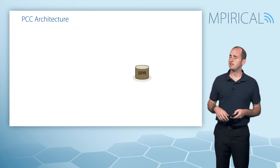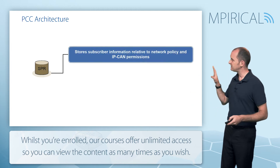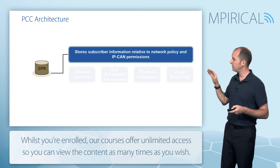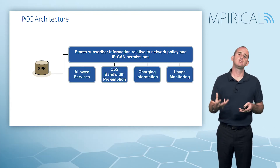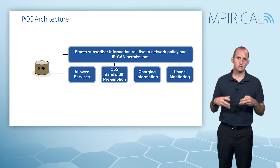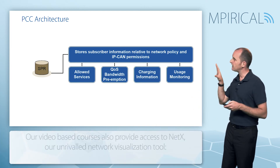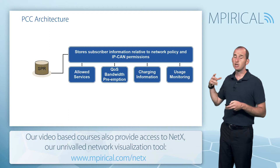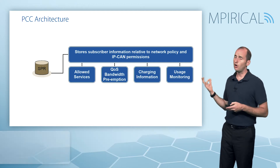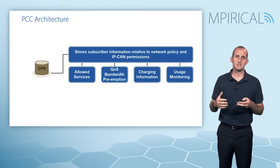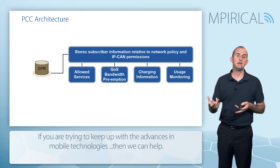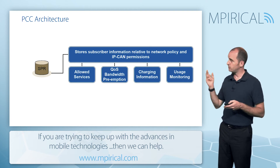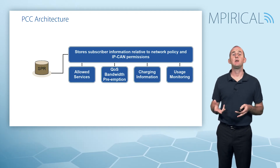Next we have the subscription profile repository, which is essentially a central repository of subscriber information. That information could be quite varied but is related to the kind of services the subscriber would be allowed to establish — things like allowed services, QoS profiles, associated charging information, and any usage monitoring characteristics that the PCRF might need to be aware of. The PCRF can pull all of this information from the subscription profile repository via the Sp interface.